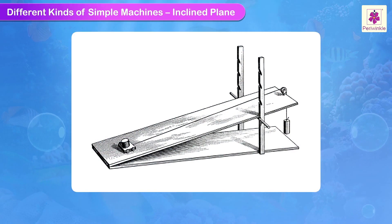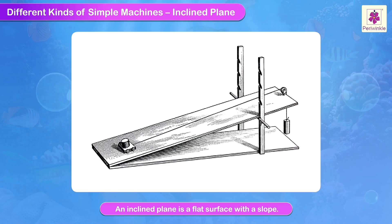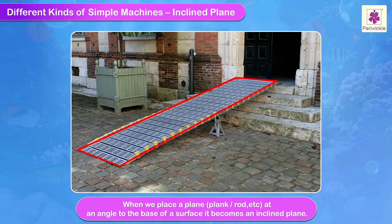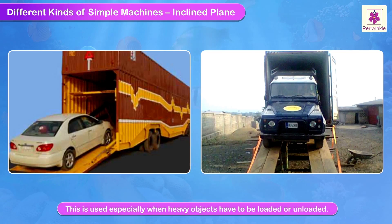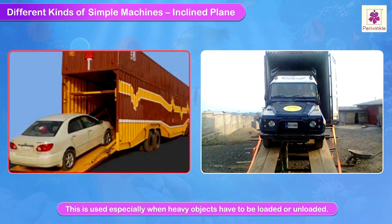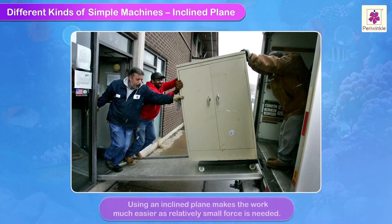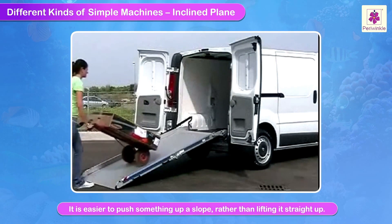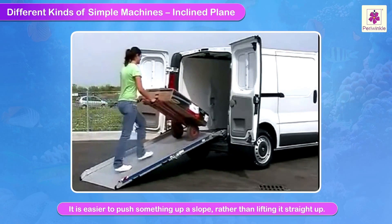Inclined plane. An inclined plane is a flat surface with a slope. When we place a plank or rod at an angle to the base of a surface, it becomes an inclined plane. This is used especially when heavy things have to be loaded or unloaded. Using an inclined plane makes the work much easier, as relatively small force is needed. It is easier to push something up a slope rather than lifting it straight up.